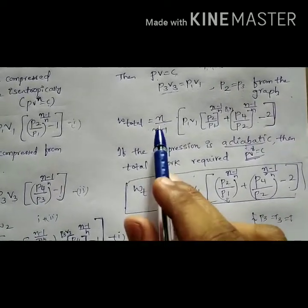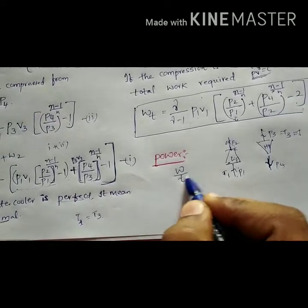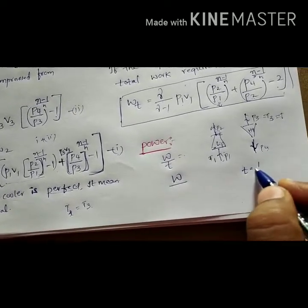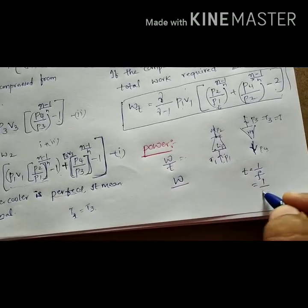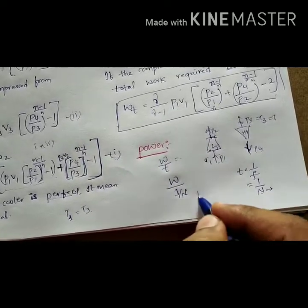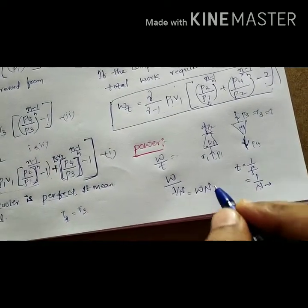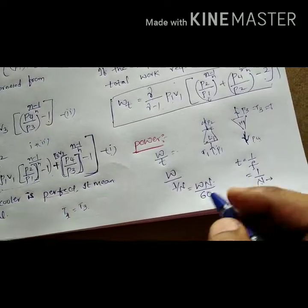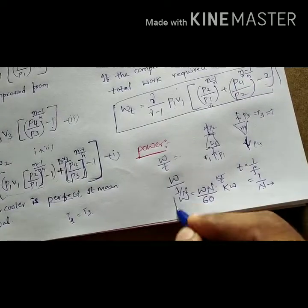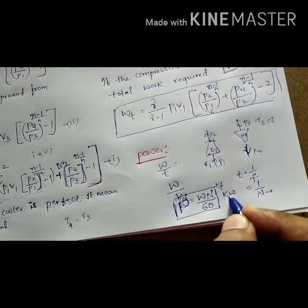For power: as stated in the previous class, power is the rate of work done. The time period equals 1/frequency, that is 1/N, where N is the number of cycles or frequency. Substituting, power equals W × N. If we substitute minutes as 60 seconds, we get the power in kilowatts. Therefore, the power formula is P = (W × N) / 60 kilowatts.